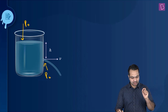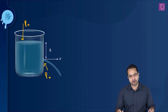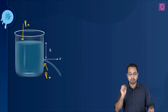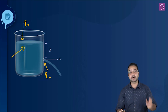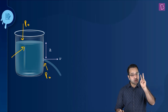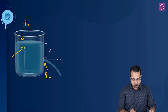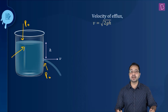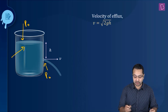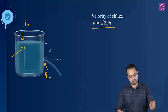Number two: the area of the orifice — it's a small orifice — so the area of the orifice is much much less than the area of the cross section of the vessel. Under these two assumptions only, Torricelli's law is applicable and it says that the velocity of efflux would be under root of 2gh.